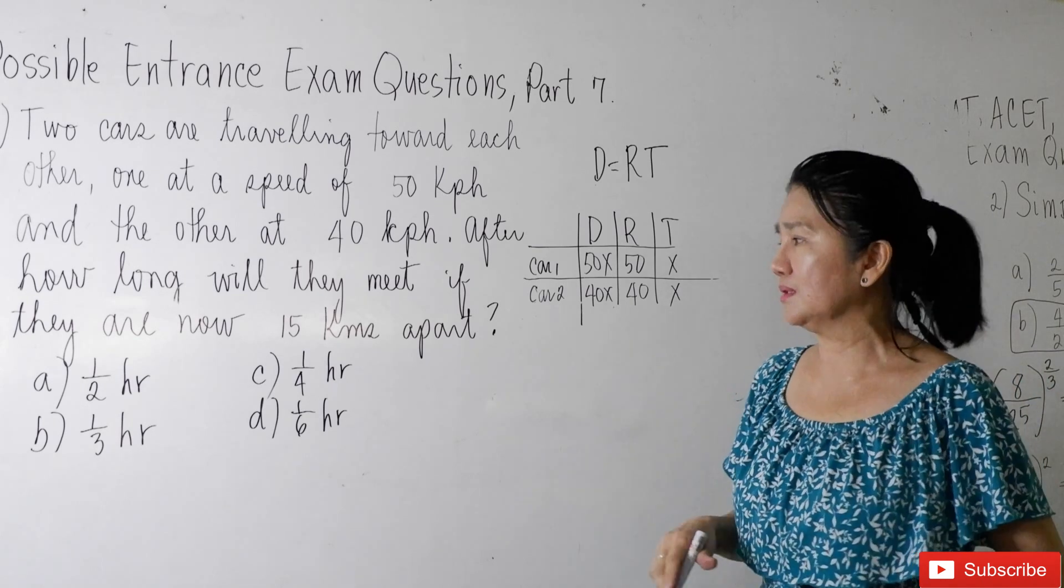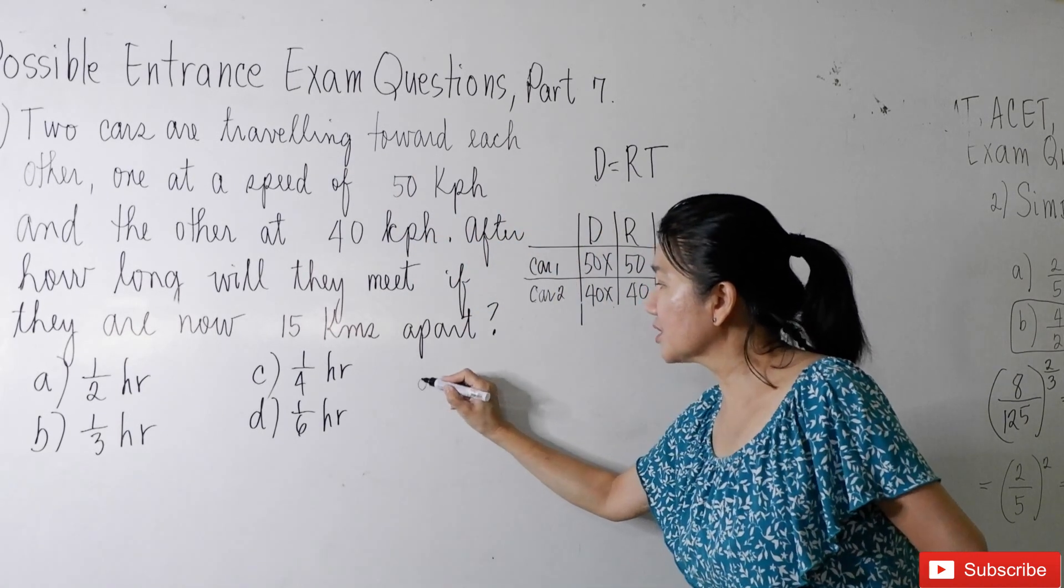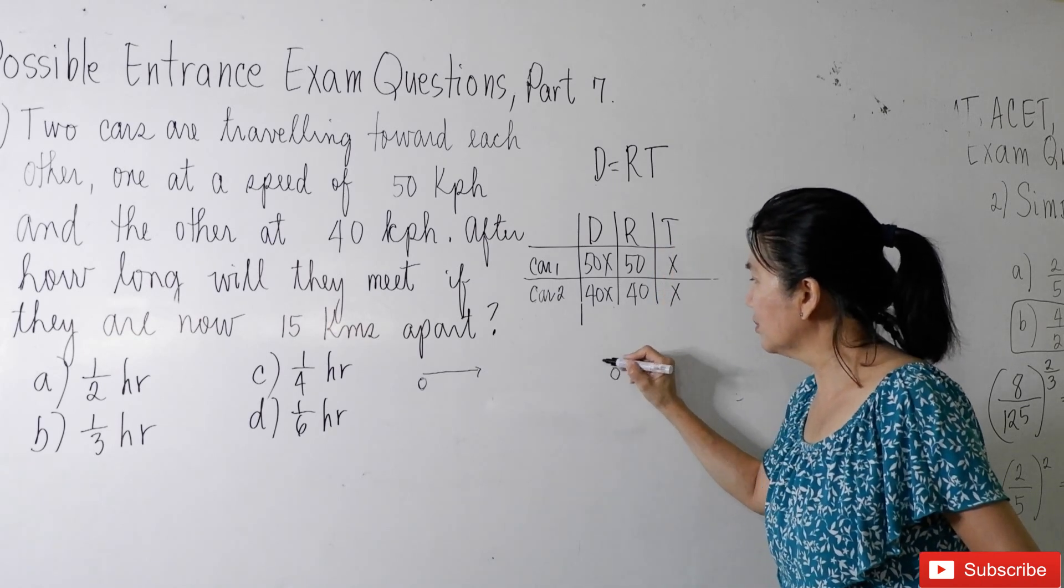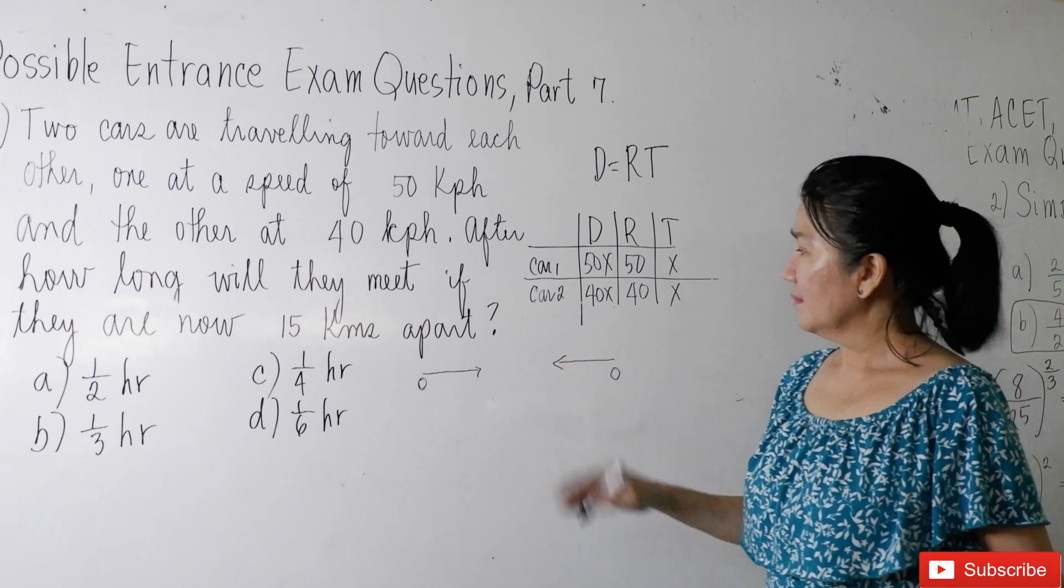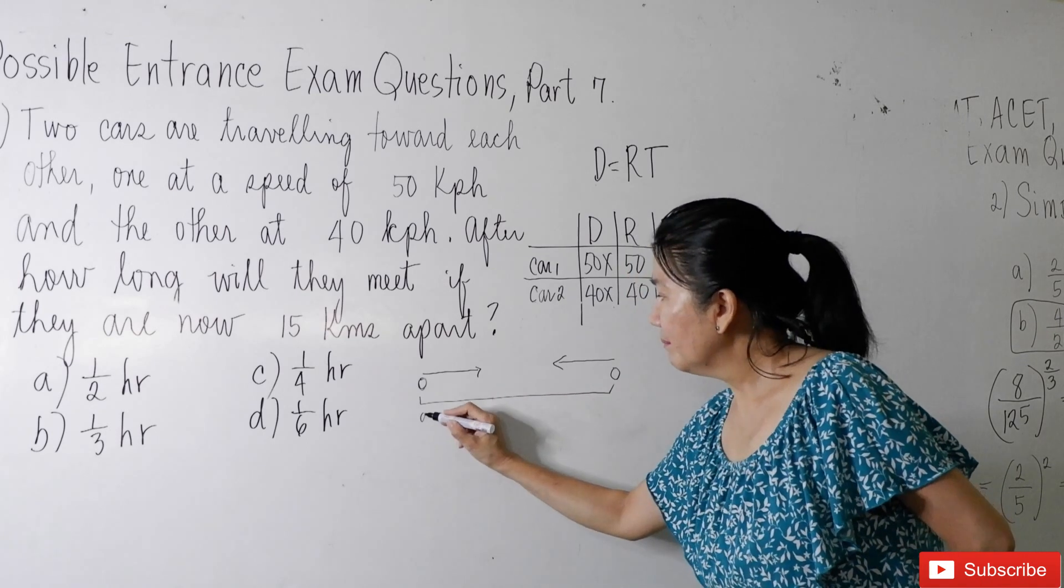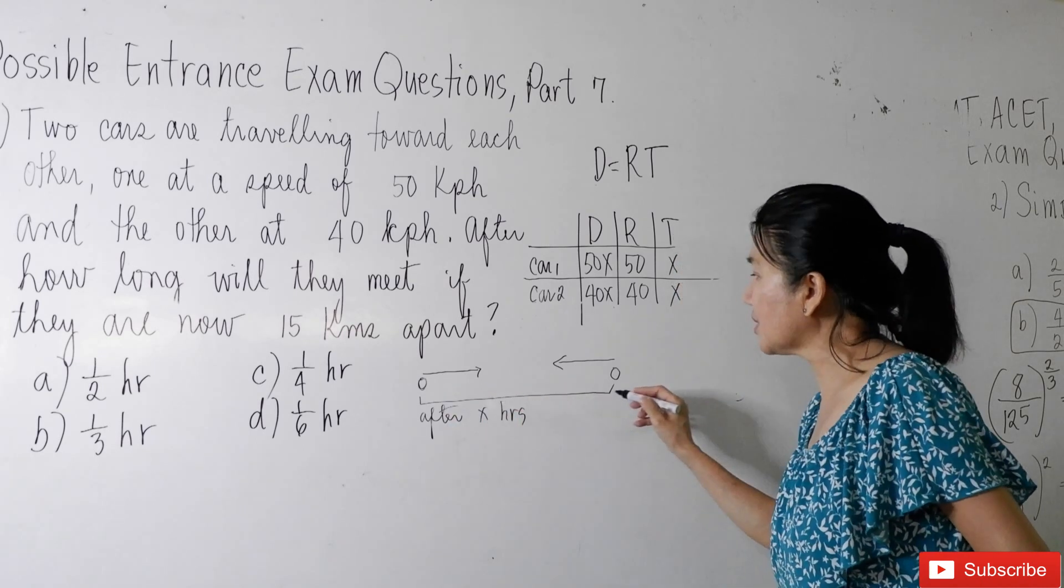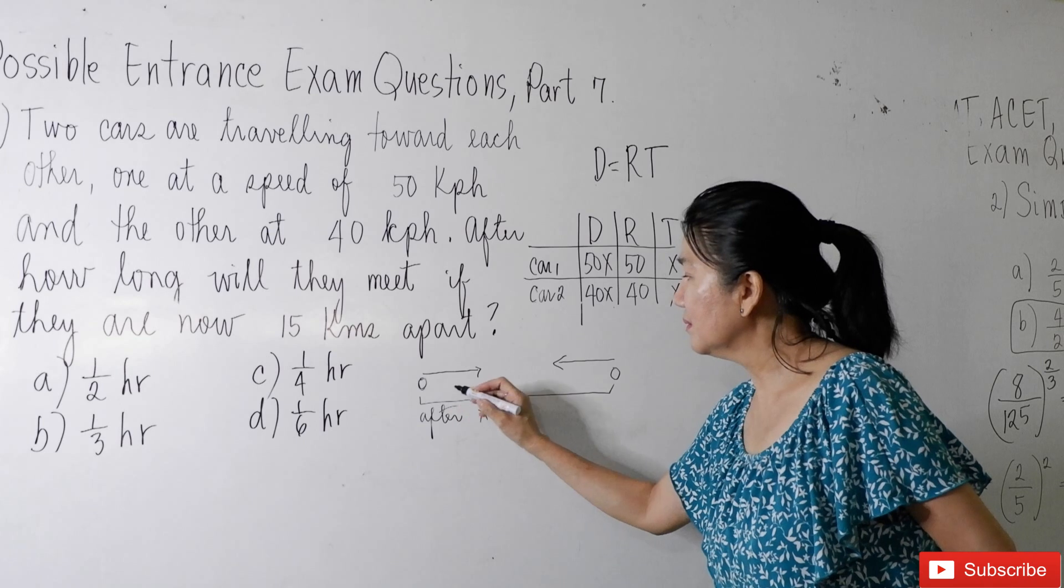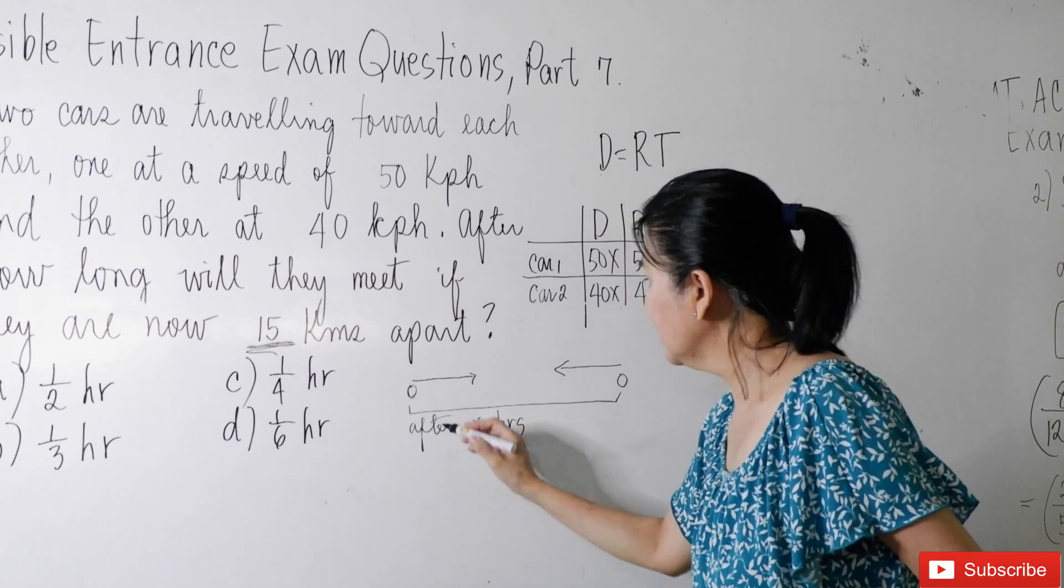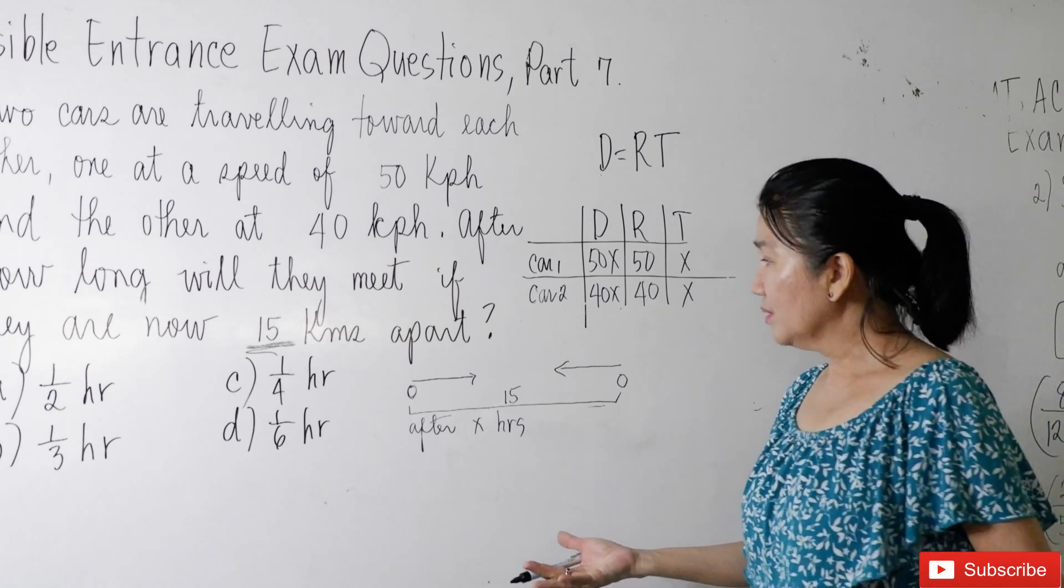Now, let's come up with an equation. It says in the problem that the two cars are traveling toward each other. So if this is car 1, it is going that way. Car 2 is also going that way. So they are traveling toward each other. After x hours, you see that the distance traveled will now be what? Well, 15 kilometers. Okay? So this whole distance will be 15 kilometers. So now, what is our equation?